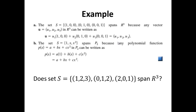The first example is called the standard basis for R3, which we'll discuss more in section 4.5. Let S be the set with vectors V1 = (1,0,0), V2 = (0,1,0), and V3 = (0,0,1). This set spans R3 because if I pick an arbitrary vector U = (U1, U2, U3) in R3, I can always write U as a linear combination of these three vectors, where C1 = U1, C2 = U2, and C3 = U3.